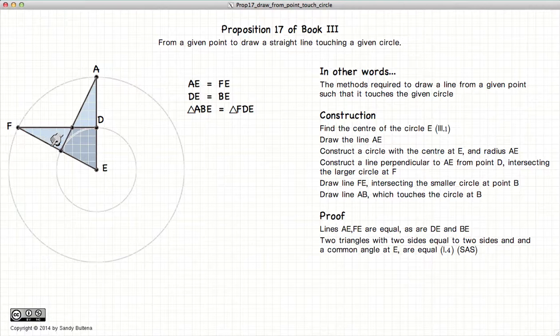EF is equal to EA, which is the long side of this triangle and the long side of that triangle. And it also has a common angle in the center. So according to Proposition 4 of Book 1, if you have a side angle side of two triangles, they are equal.